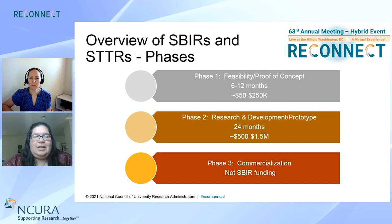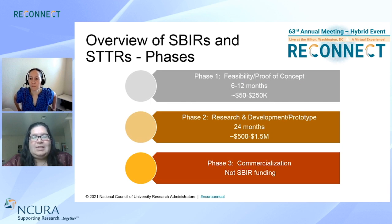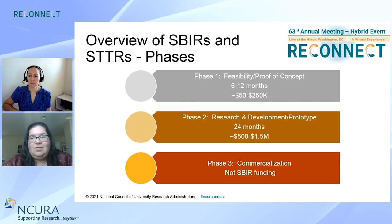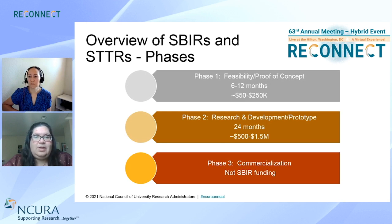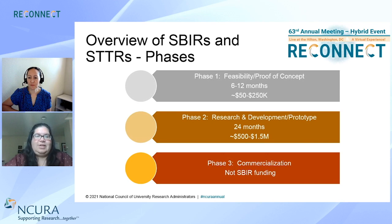SBIRs and STTRs are structured in three phases. Phase one is the feasibility and proof of concept phase. It can be anywhere from six to 12 months, and funding can range from $50,000 to $250,000. It depends on the federal agency, so you need to read the solicitation to find out how much the agency is willing to give — not all agencies give the full $250K; some give $100K.